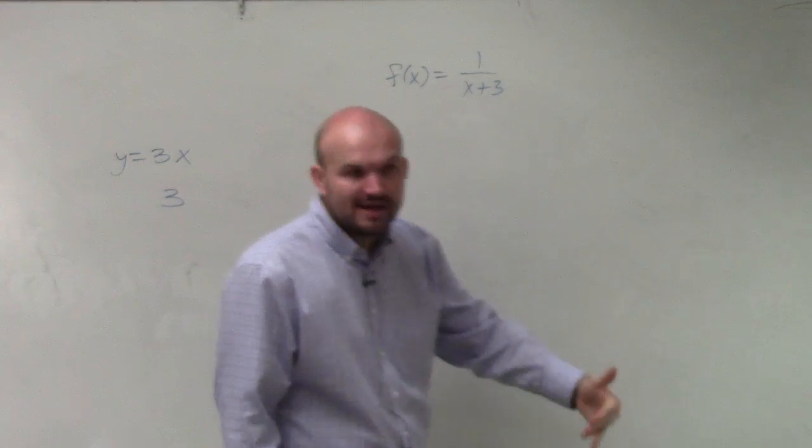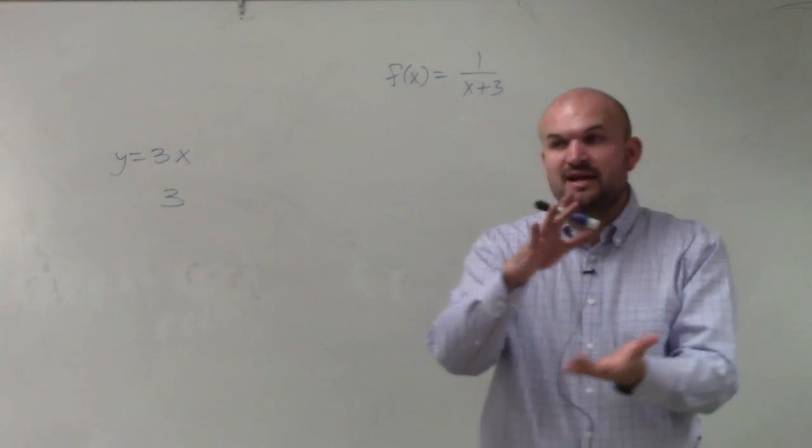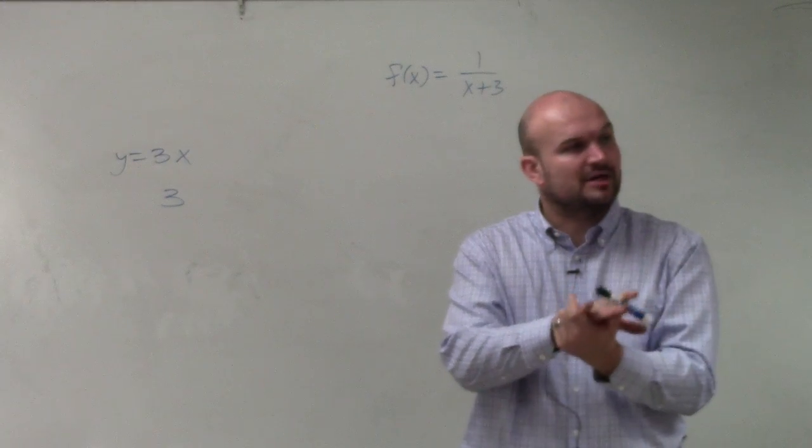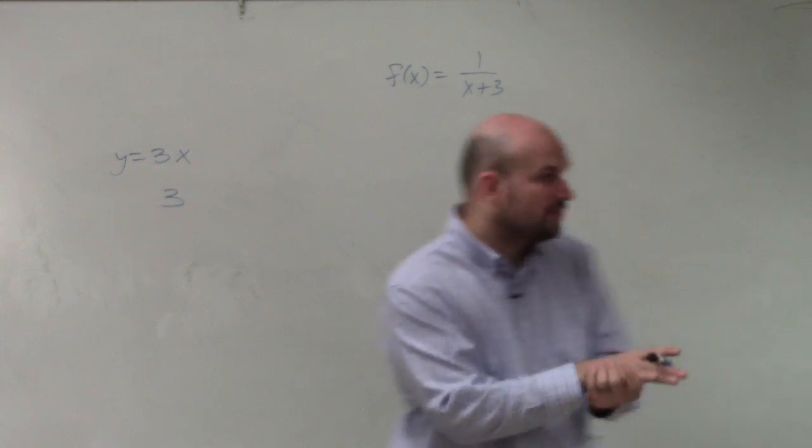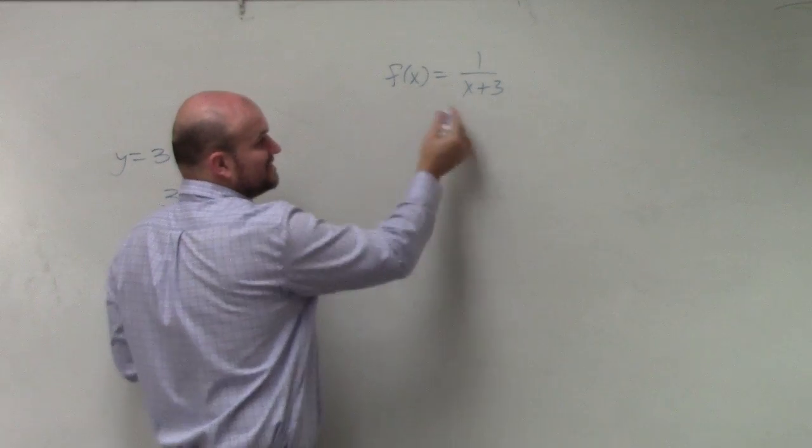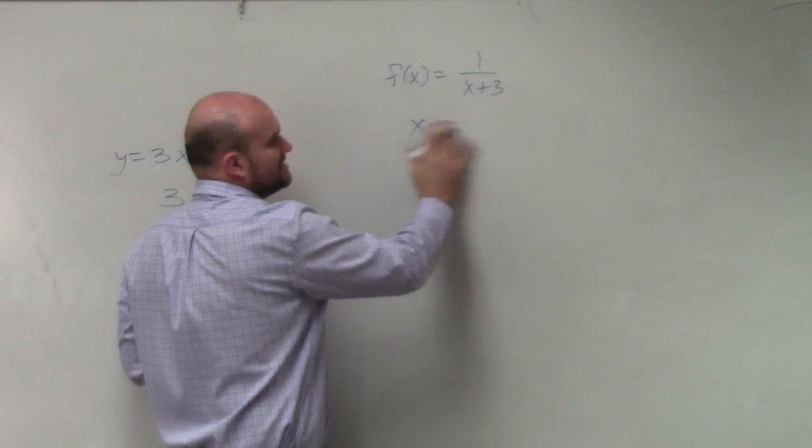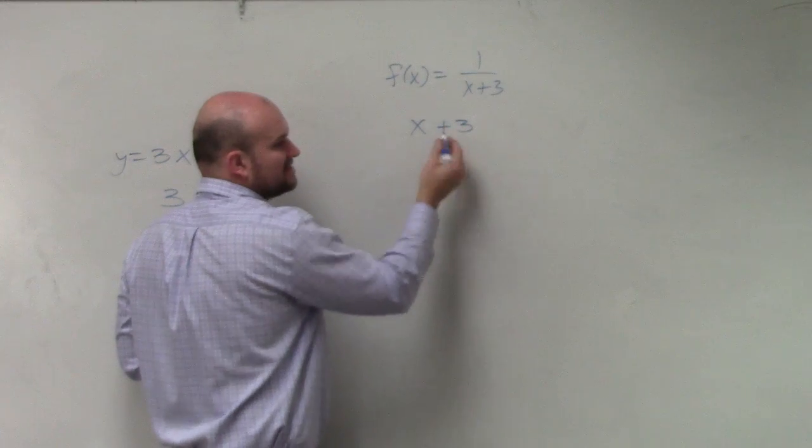So remember, our constraint when talking about the domain is whenever we have a variable in the denominator, we know that variable cannot make our denominator equal to 0. So therefore, what we need to do, identifying the domain, is we need to set our denominator equal to 0, and then solve.